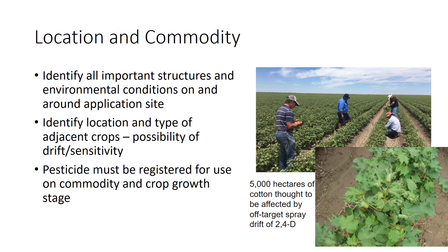The suitability of the pesticide for the application site is an important consideration in the selection of the material. Prior to writing a pesticide recommendation, identify all important structures and environmental conditions on and around the application site. The location of dwellings, schools, hospitals, parks, playgrounds, commercial areas, and other places where people may work, live, or play imposes limitations that prohibit the use of certain pesticides. The location and type of adjacent crops can also be determining factors; the possibility of drift and the sensitivity of an adjacent crop could eliminate certain pesticides as feasible alternatives.